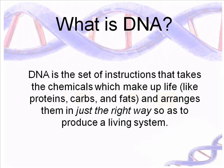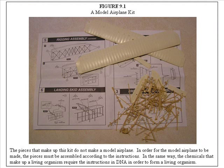What exactly is DNA? DNA, or deoxyribonucleic acid, is a set of instructions that takes the chemicals which make up life — like proteins and carbs and fats — and arranges those chemicals in just the right order so as to produce a living system. This model airplane kit is a good example of what DNA is like. The pieces that make up this kit do not make a model airplane; the pieces must be assembled according to the instructions. In the same way, the chemicals that make up a living organism require the instructions in DNA in order to form the living organism.